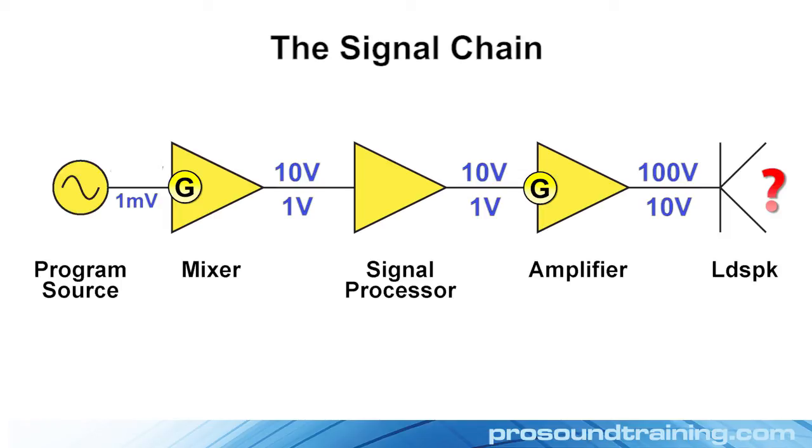Once the gain structure is established, the system is operated from the mixer, and the main fader on the mixer determines the output level of the system. Now, where can things go wrong?